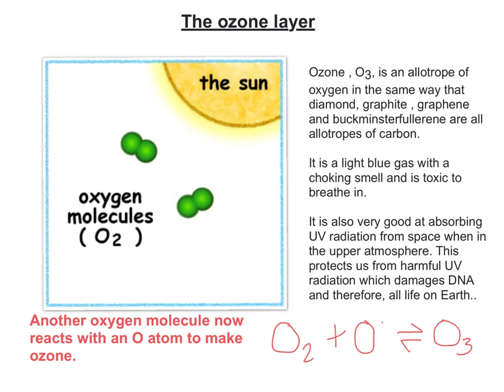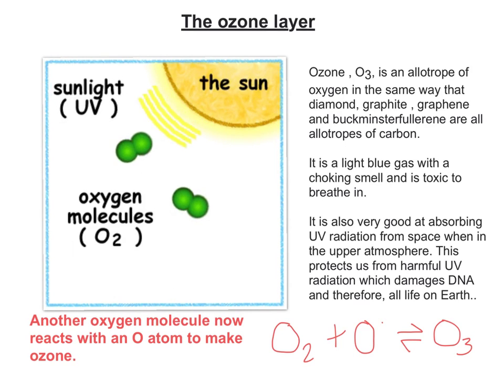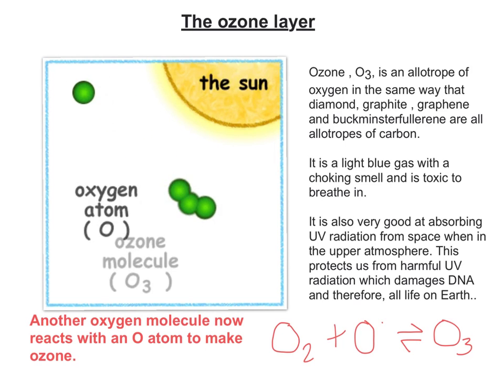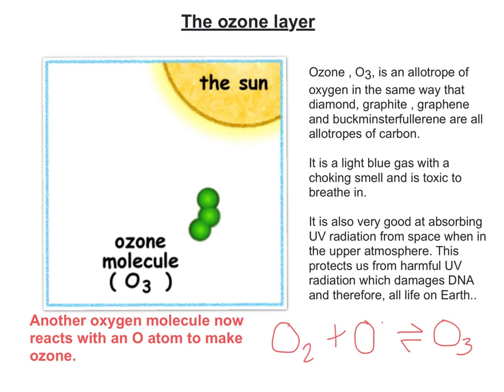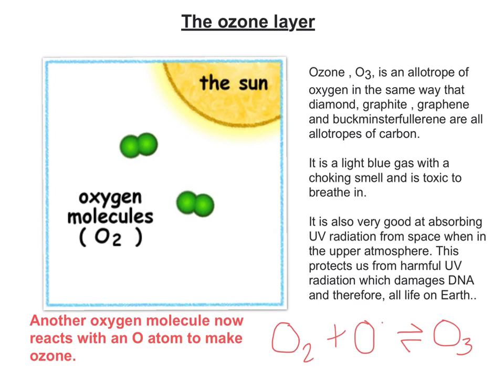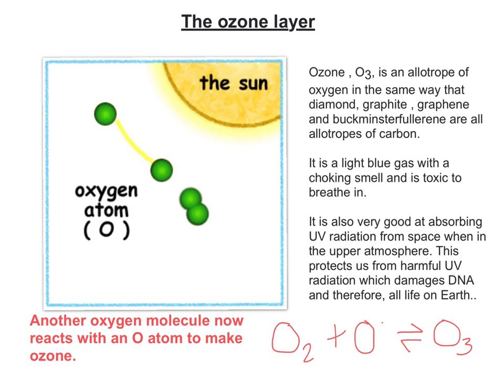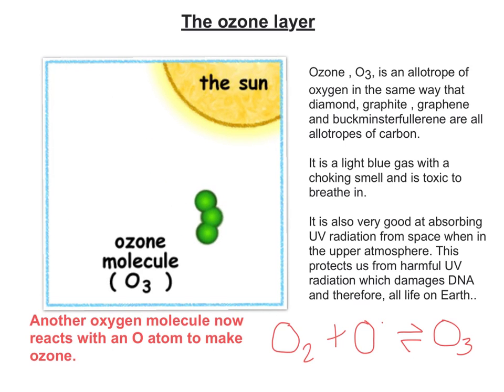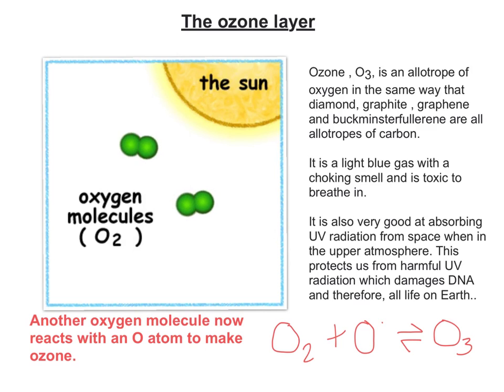If something were to enter the atmosphere from Earth that disrupts this process, the whole balance of the ozone layer is going to be skewed and disrupted, and that's going to threaten our well-being here on Earth, because the UV radiation will now make it through the ozone layer — there will be less ozone to reflect it back or absorb it. So we need to look at what sort of pollutants might actually disrupt the ozone layer.